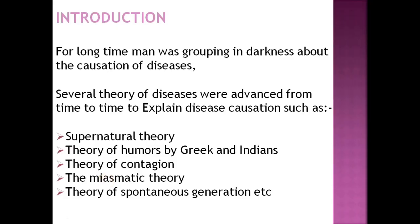There were many theories present before the germ theory explaining how disease is caused. These included the supernatural theory, theory of humors, theory of contagion, theory of miasma — miasma meaning bad air causing disease — and the theory of spontaneous generation. All these theories lacked scientific evidence.